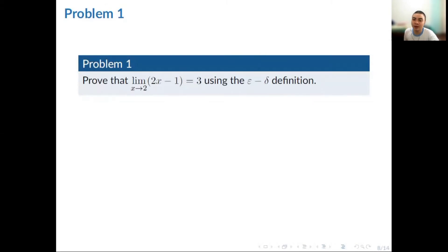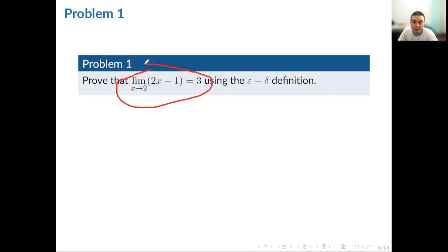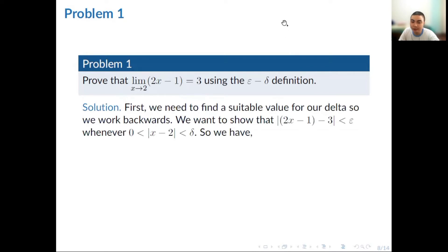Our review wouldn't be complete without a problem-solving portion. We have prepared two problems. The first problem is on the epsilon-delta definition of a limit — we will prove the given equation using the formal definition. We want to show that the absolute value of (2x minus 1) minus 3 is less than epsilon whenever the absolute value of x minus 2 is greater than 0 but less than delta.